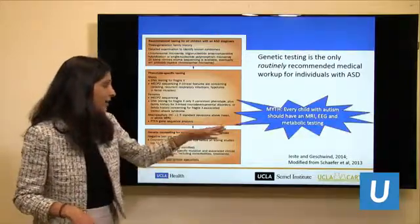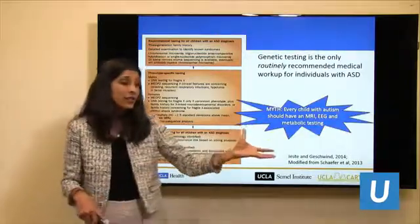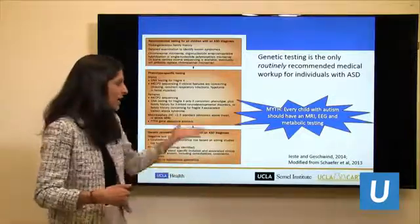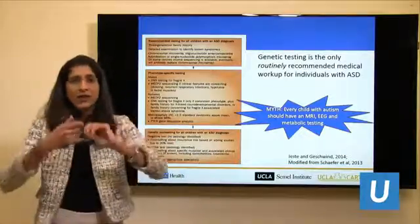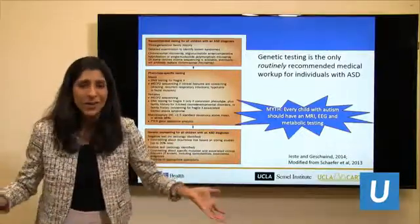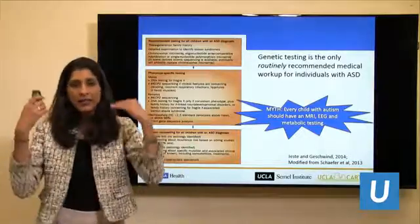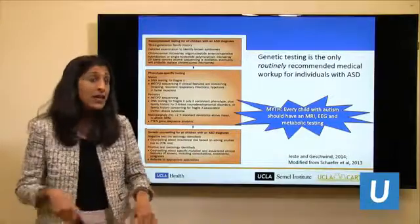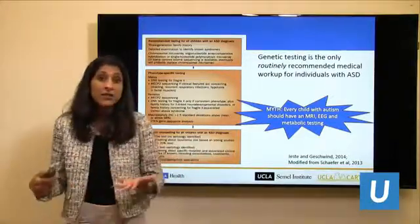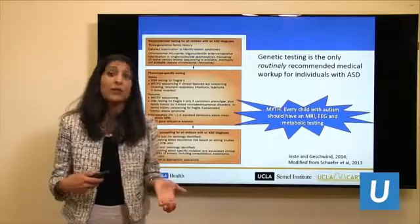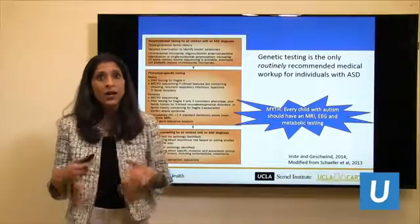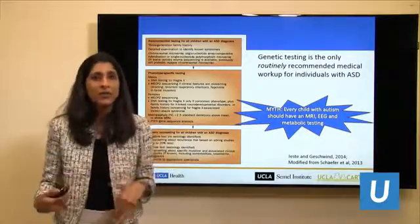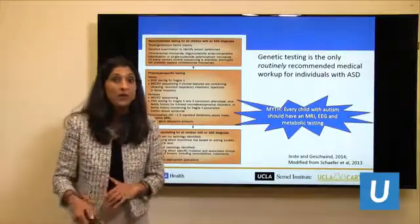This dispels a myth that every child with autism needs pan-scanning — every child does not routinely require an EEG, MRI, or metabolic testing. Every child should undergo genetic testing. From a practical standpoint, most insurances will now cover at least the microarray, and we work hard at UCLA to help families get those tests covered so they're not paying out of pocket.